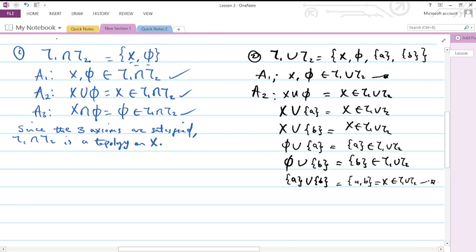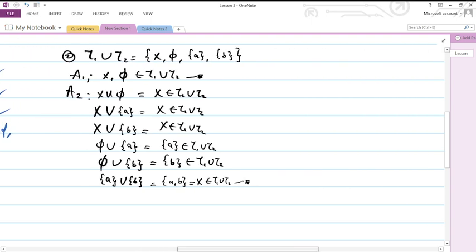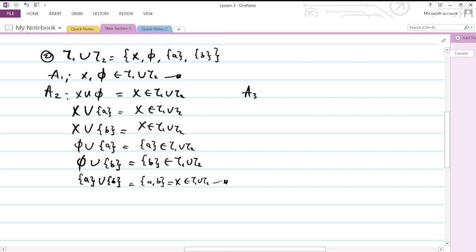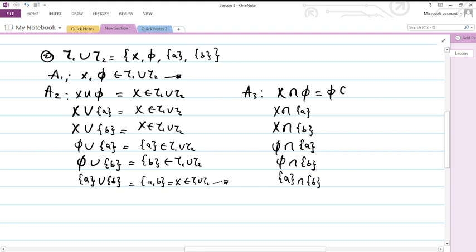So the second axiom is satisfied. Now for the third axiom: we have X ∩ X = X, X ∩ {a} = {a}, X ∩ {b} = {b}, X ∩ ∅ = ∅. ∅ ∩ {a} = ∅, ∅ ∩ {b} = ∅.